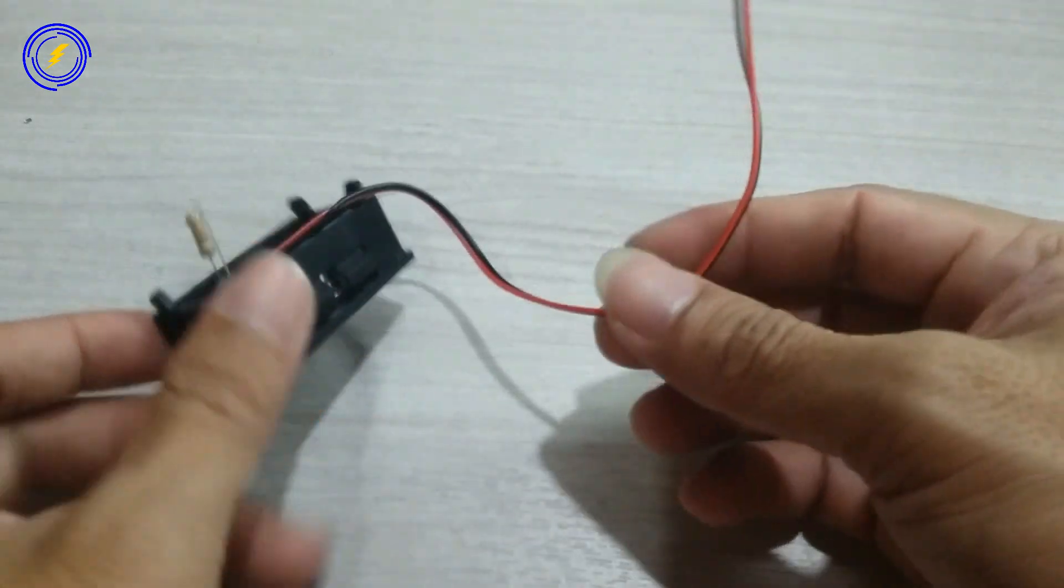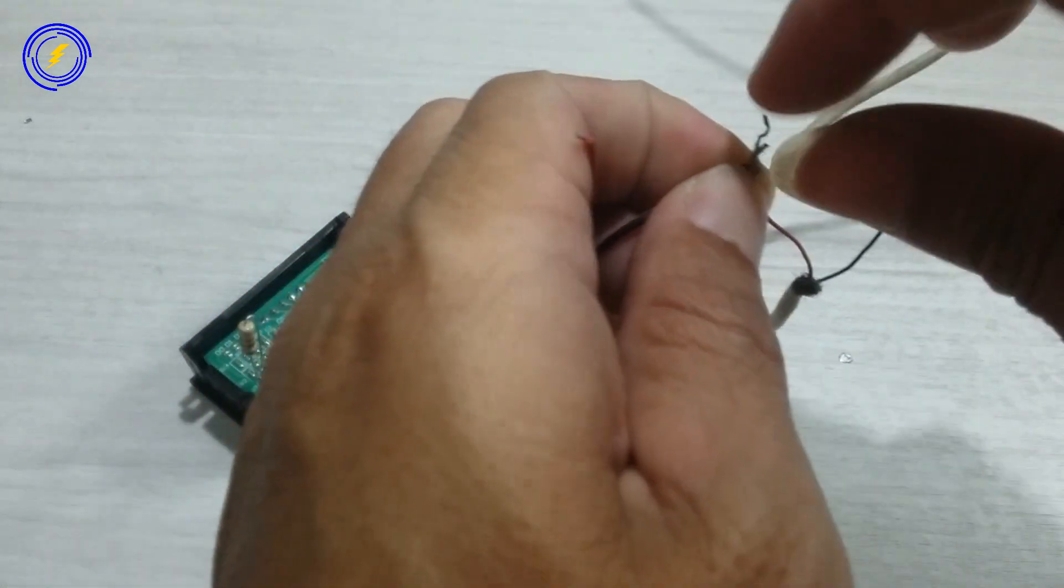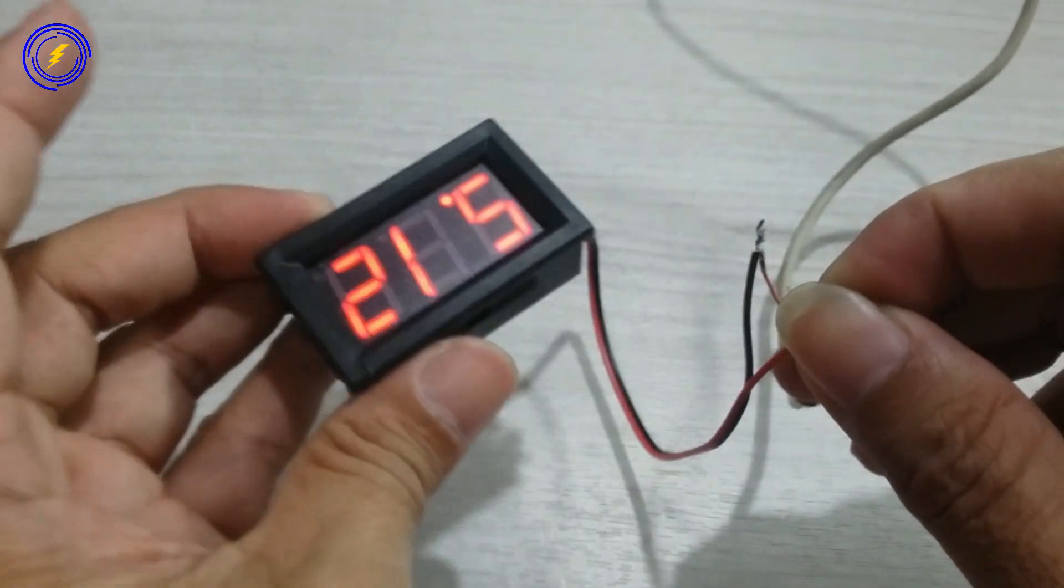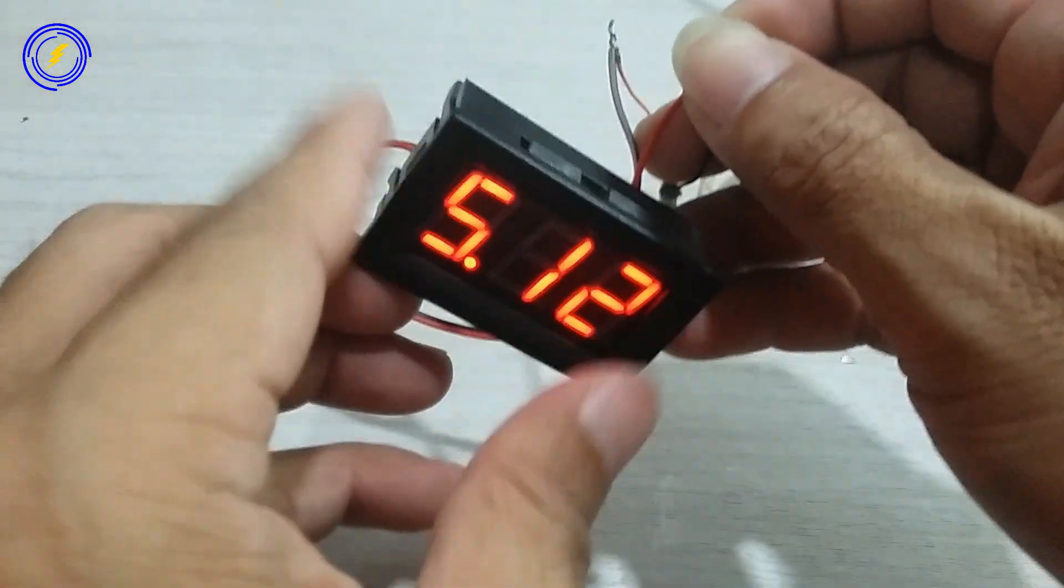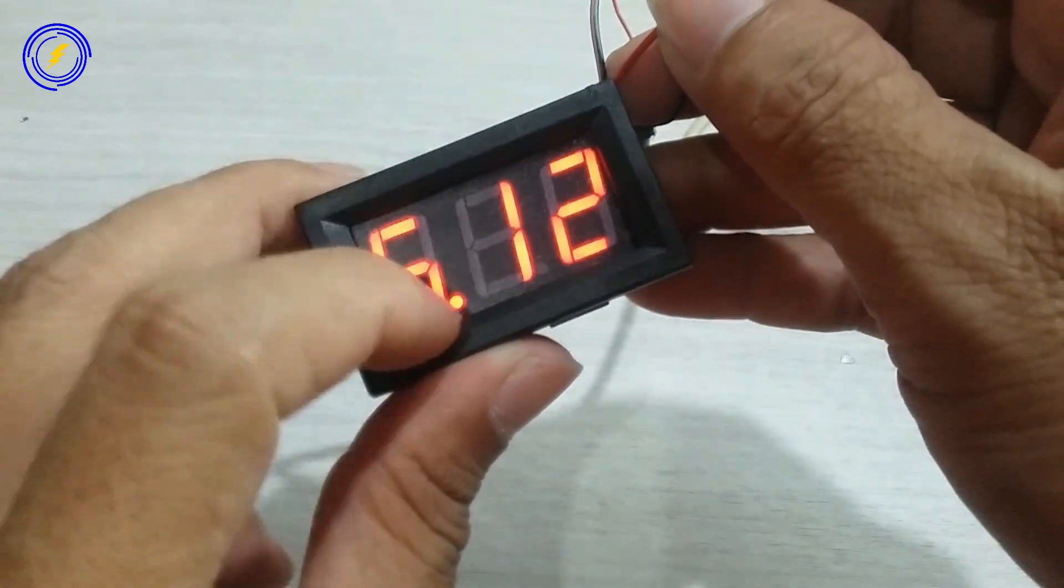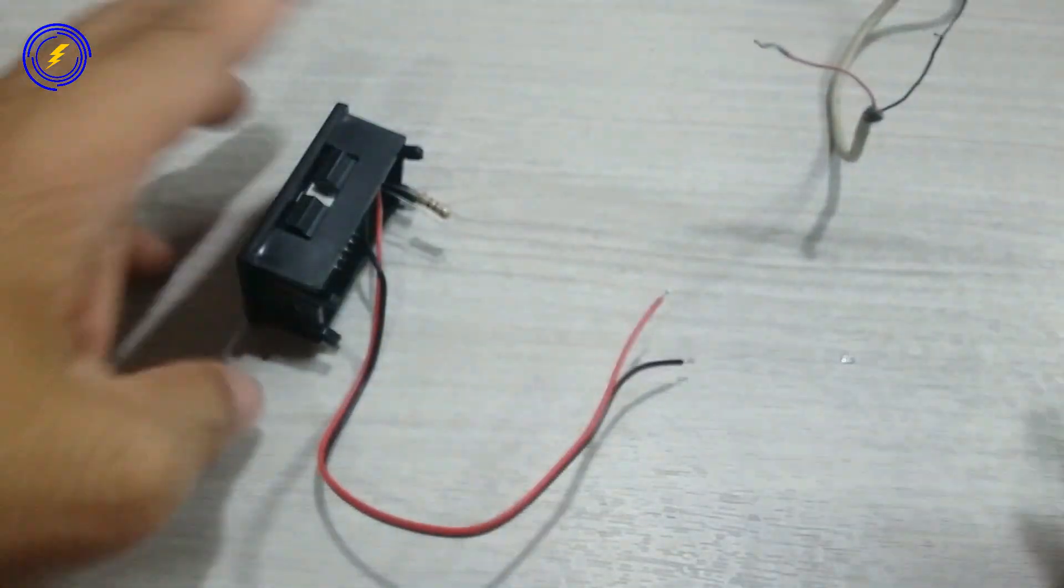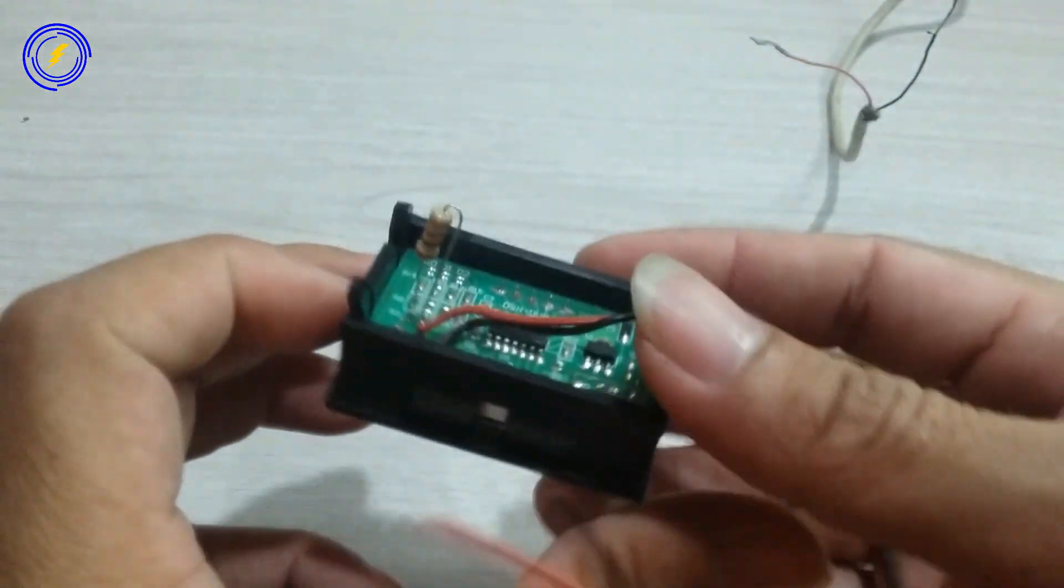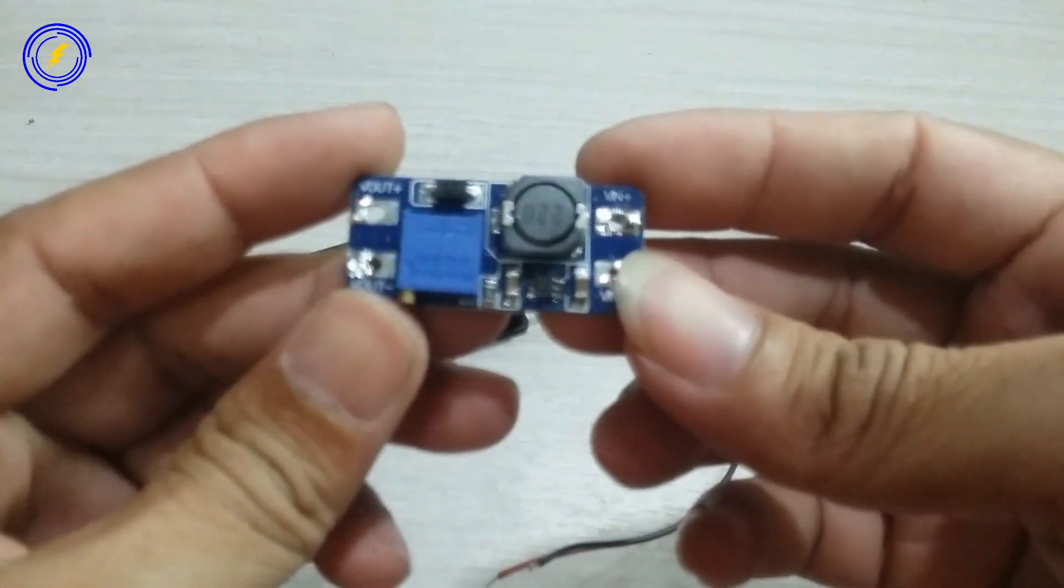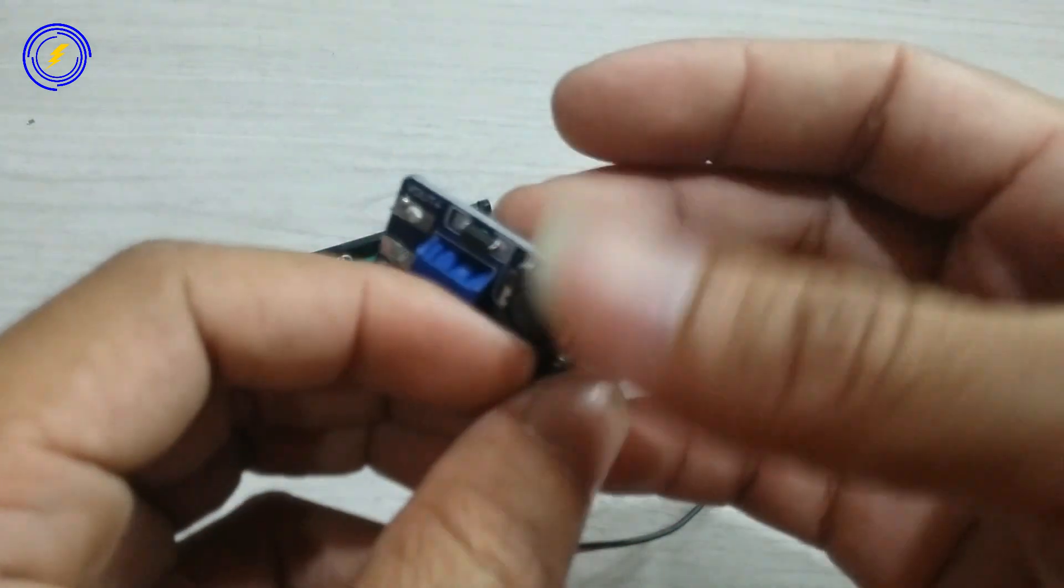Kita akan coba lagi nyalakan. Muncul lagi angkanya, 5,12. We are going to the next step up, I already have a step up DC, this range is only 27V.